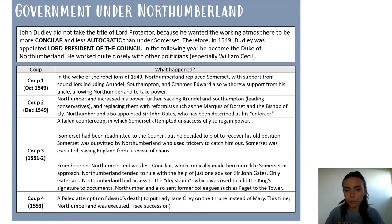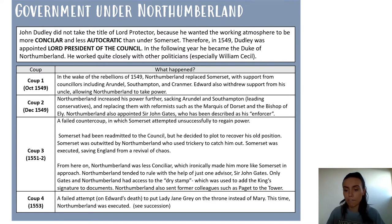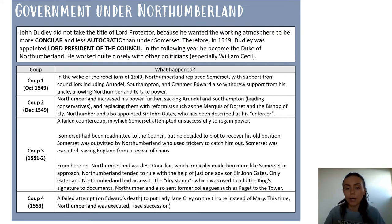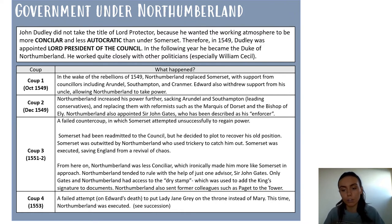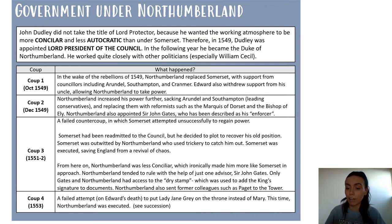Coup number four is one we'll look at in more detail later, so I'll give just a brief overview. Coup number four is the failed attempt, upon Edward's death, by Northumberland to put Lady Jane Grey on the throne instead of Mary. Whilst Lady Jane Grey will be Queen for nine days, she will not stay as Queen and Mary will take over. This event is called The Device and will be discussed when we do succession.